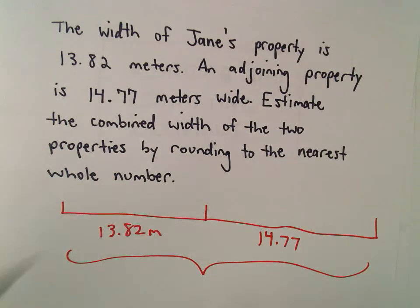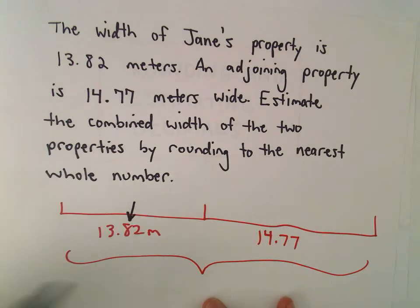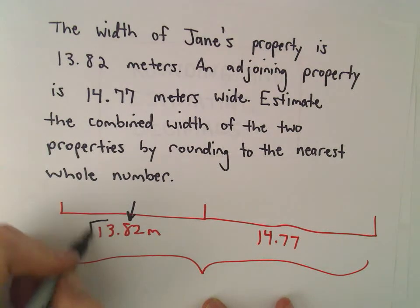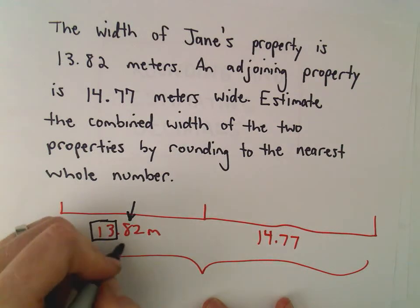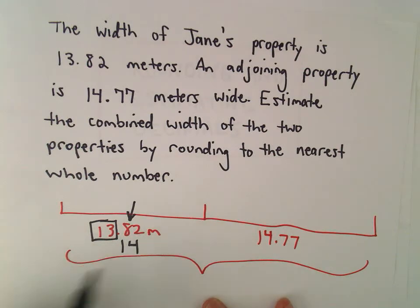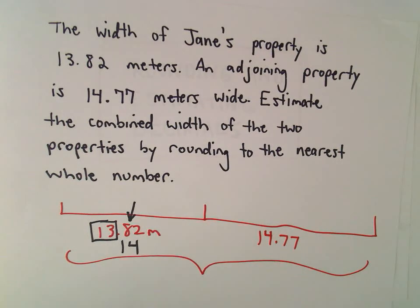All right, so again, all I'm going to do is look at that tenths digit. So 8 is 5 or larger, which means I increase the value of the whole number by 1. So 13.82 is going to be close to the whole number 14.